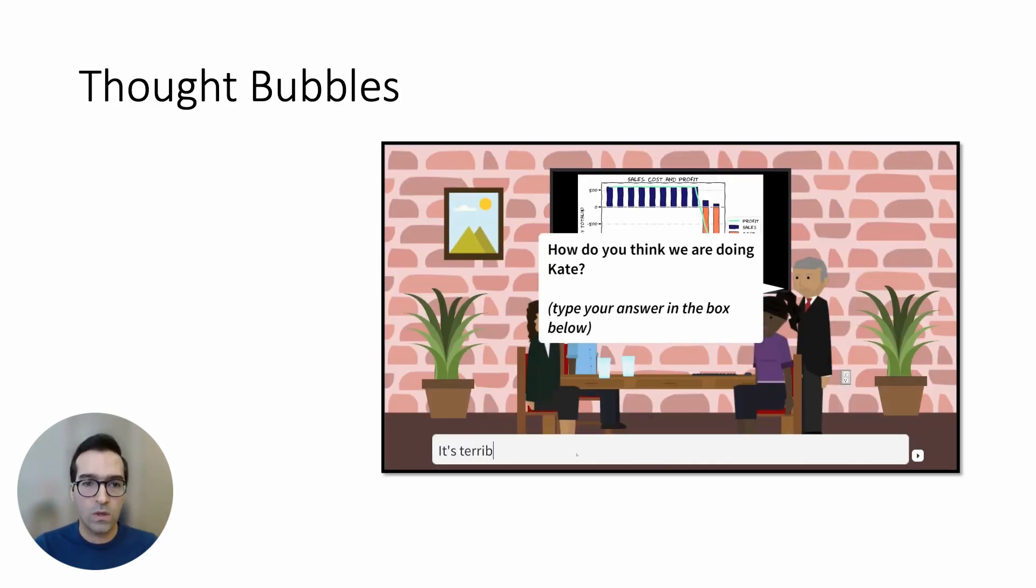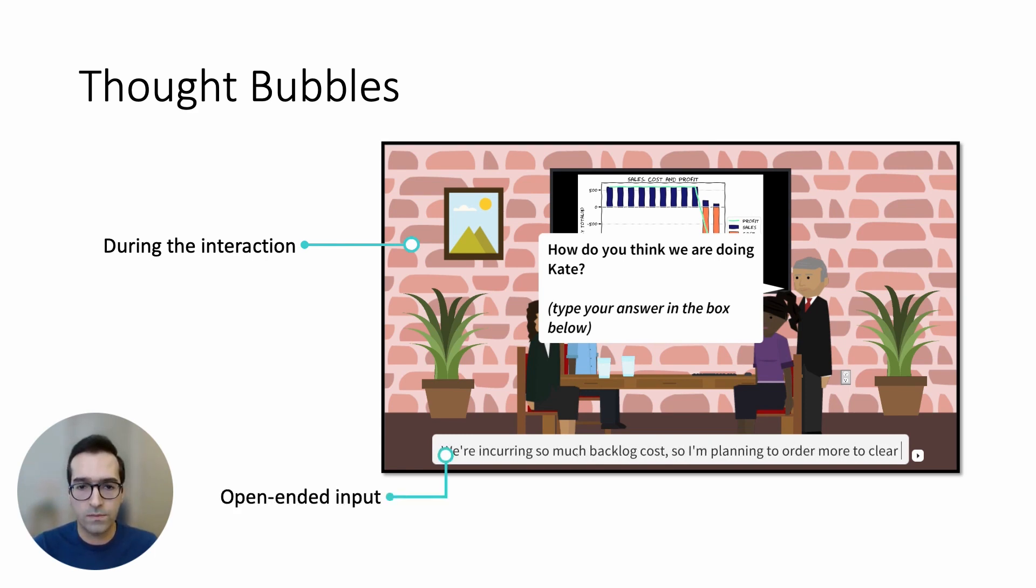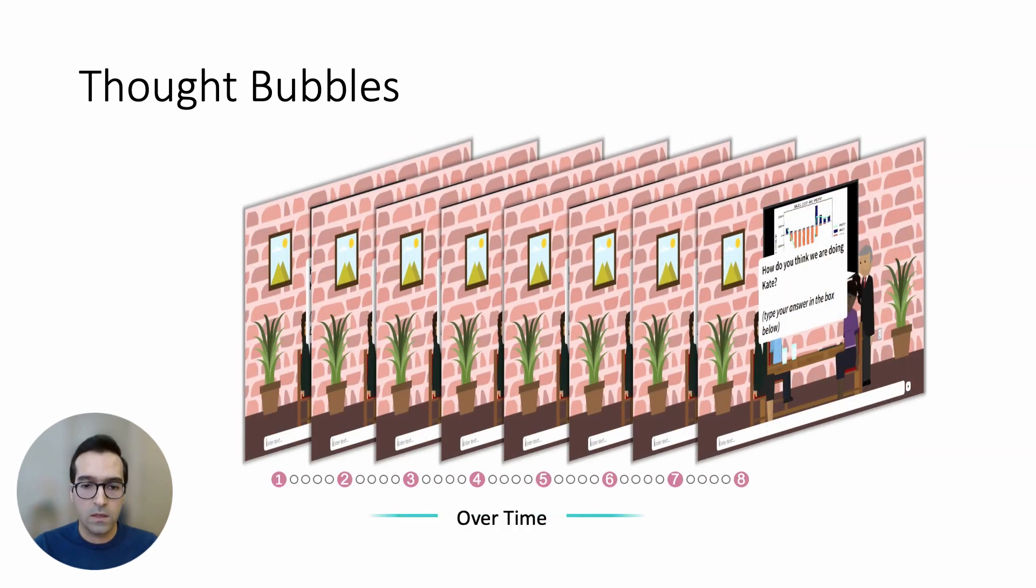As part of game-based, we design thought bubbles for eliciting mental models of human decision makers. A thought bubble has three main characteristics. First, we query players using thought bubbles in context and during the interaction to prevent any interference with the elicitation process. Second, we use an open-ended prompt where we ask, how do you think we are doing? By doing that, we aim to reduce framing bias and at the same time help players verbalize their thought process. Finally, we do all of this over time where players respond to this prompt eight times during the course of the game.